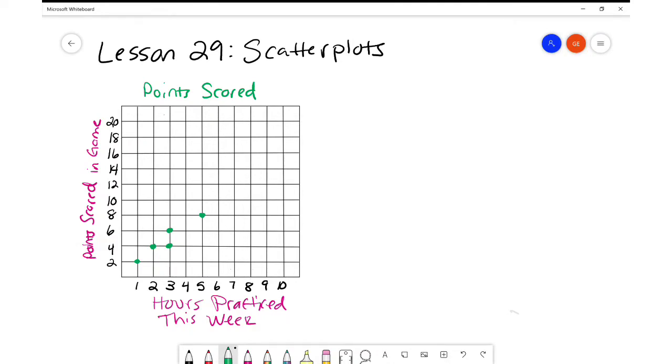Then we've got five hours with eight points. Let's get some more the rest of the players on here. Someone practiced for six hours this week, and they scored eight points in the game. Someone practiced for seven hours and scored 10 points.